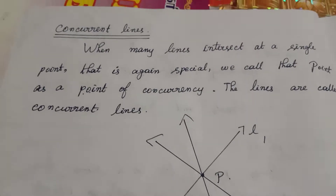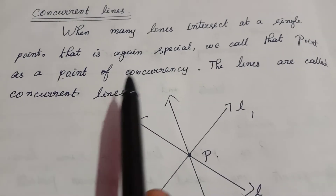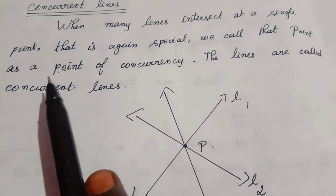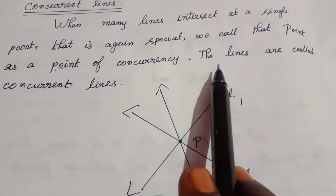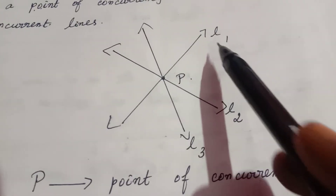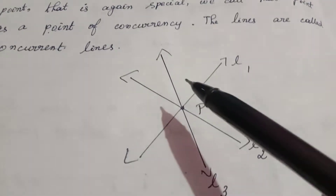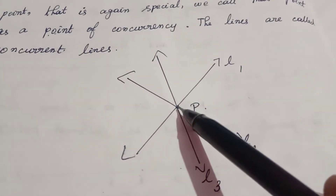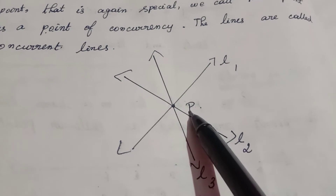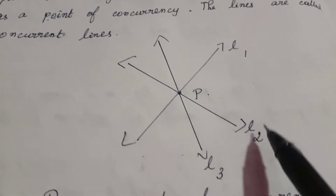Concurrent lines. When many lines intersect at a single point, we call that point the point of concurrency, and the lines are called concurrent lines. Here, three lines L1, L2, and L3 meet and intersect at one point P. This point P is called the point of concurrency, and these three lines are called concurrent lines.